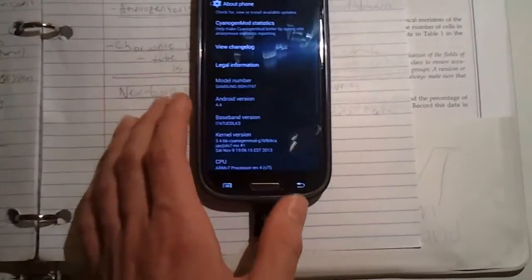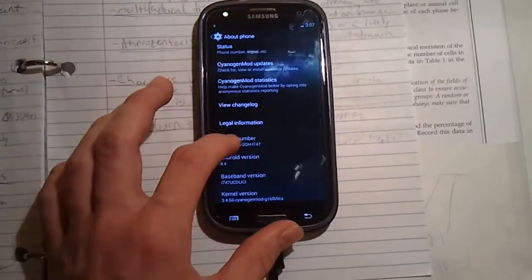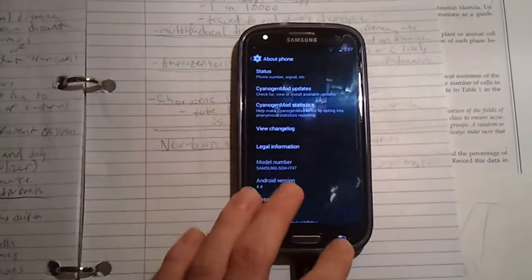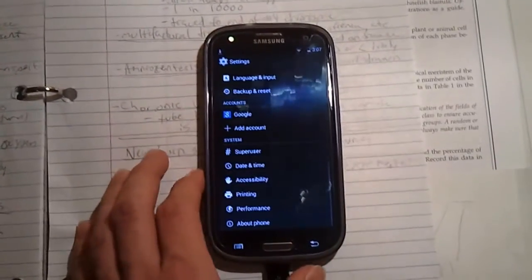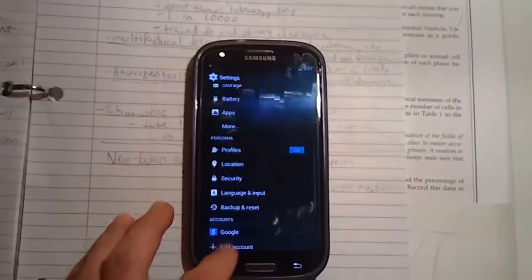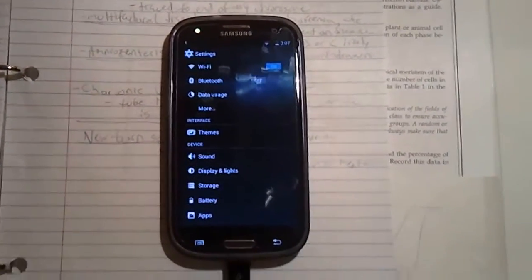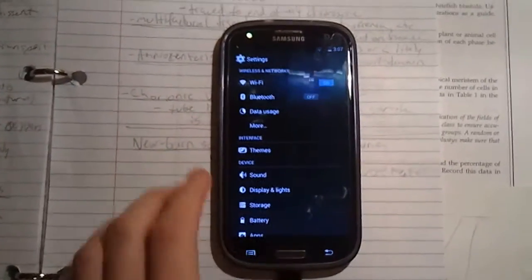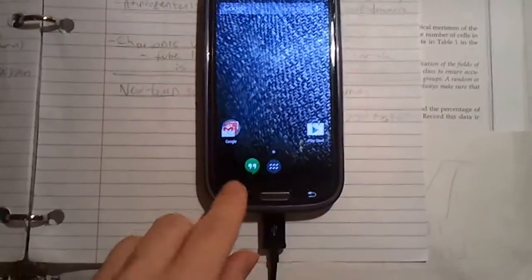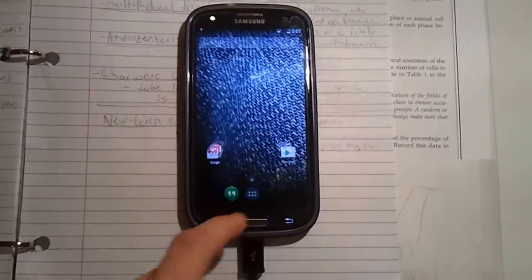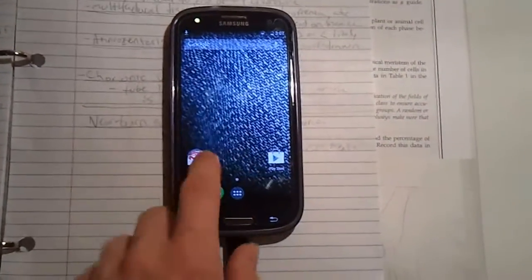So there it is. That works, everything. And as you can see, the device number says i747, but this ROM also works for the T999, which is the T-Mobile version. This comes with all the CyanogenMod features that were ported to it, the ones that work at least. So the regular launcher, this isn't Trebuchet, this is the launcher that comes with 4.4. Everything is smooth, like I've said.